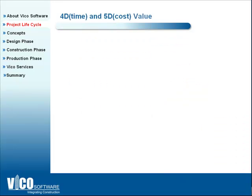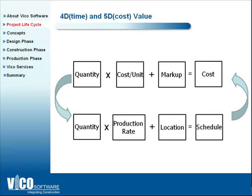The concept behind 5D BIM is very simple. You can see these two simple equations representing how an estimate and a schedule are created. Cost is typically broken down by quantity, unit costs, and subcontractor or general contractor markup — that becomes your estimate. A schedule is broken down by quantity, production rate, the amount of material you have to install, the crew size available to install it, and the location where they need to install it. Most general contractors typically look at the cost and schedule side and leave the detailed work to the subcontractor to figure out the actual cost and schedule accuracy.